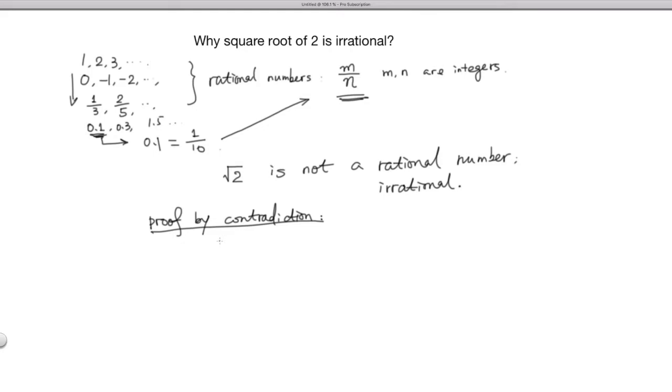How we do that. Let's assume that square root 2 instead is a rational number. And we're going to show contradictions derived from this assumption. Let's assume square root 2 is a rational number. So it can be written as m over n, where m is a positive integer, n is a positive integer, and it is in the simplest form.